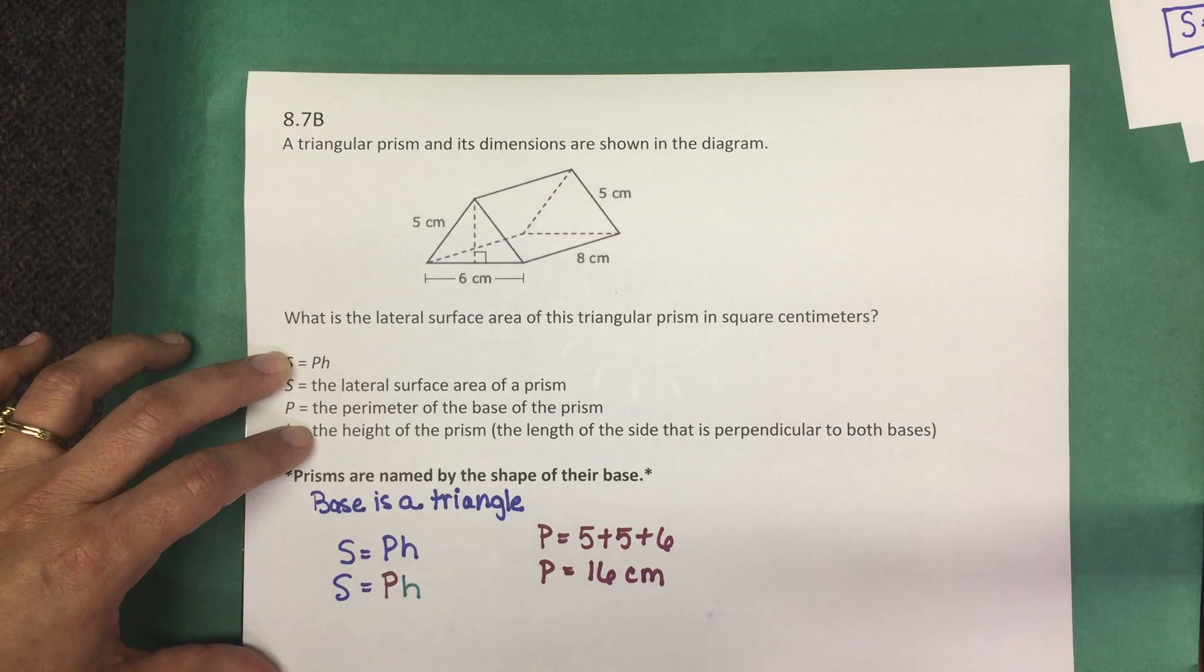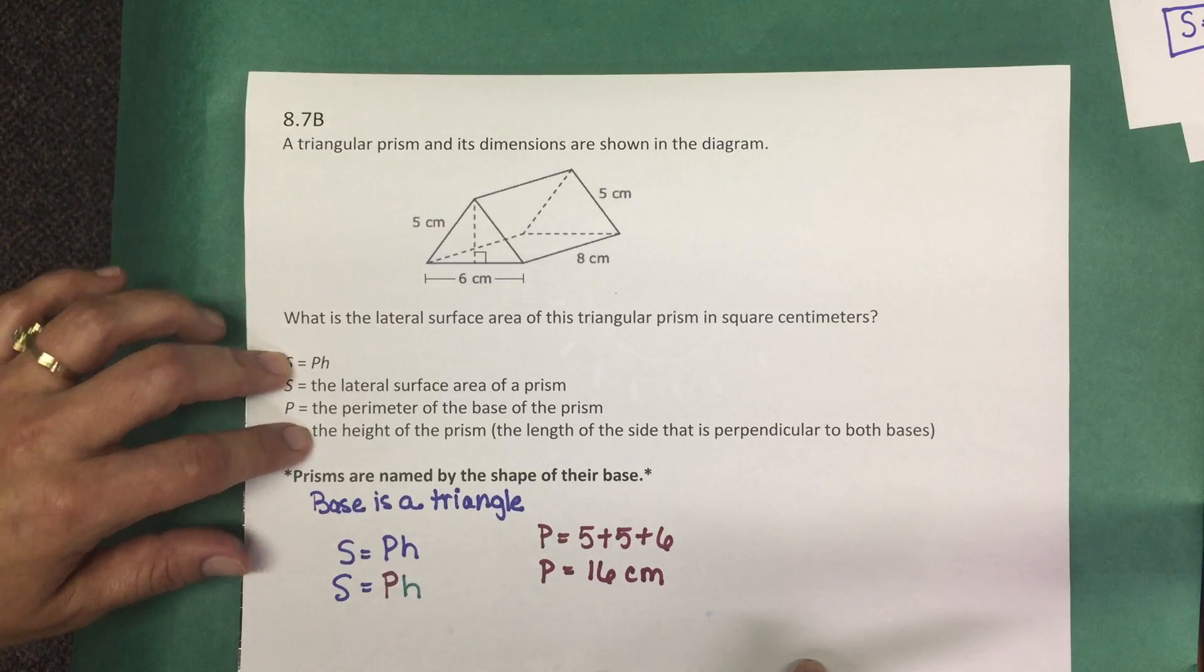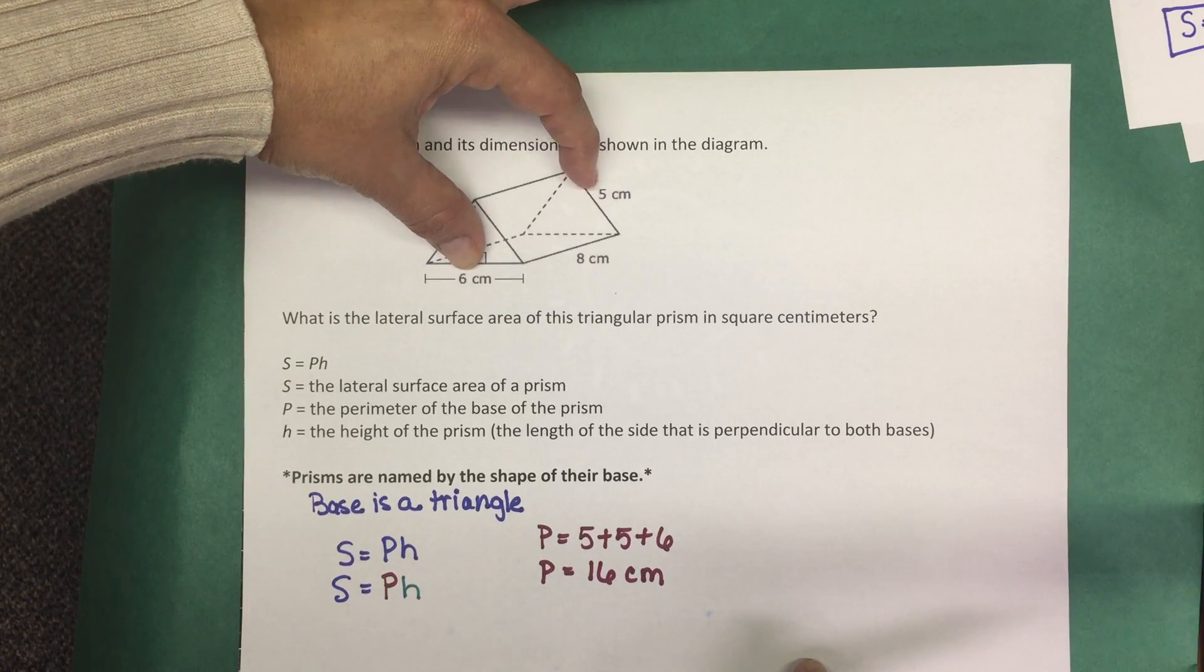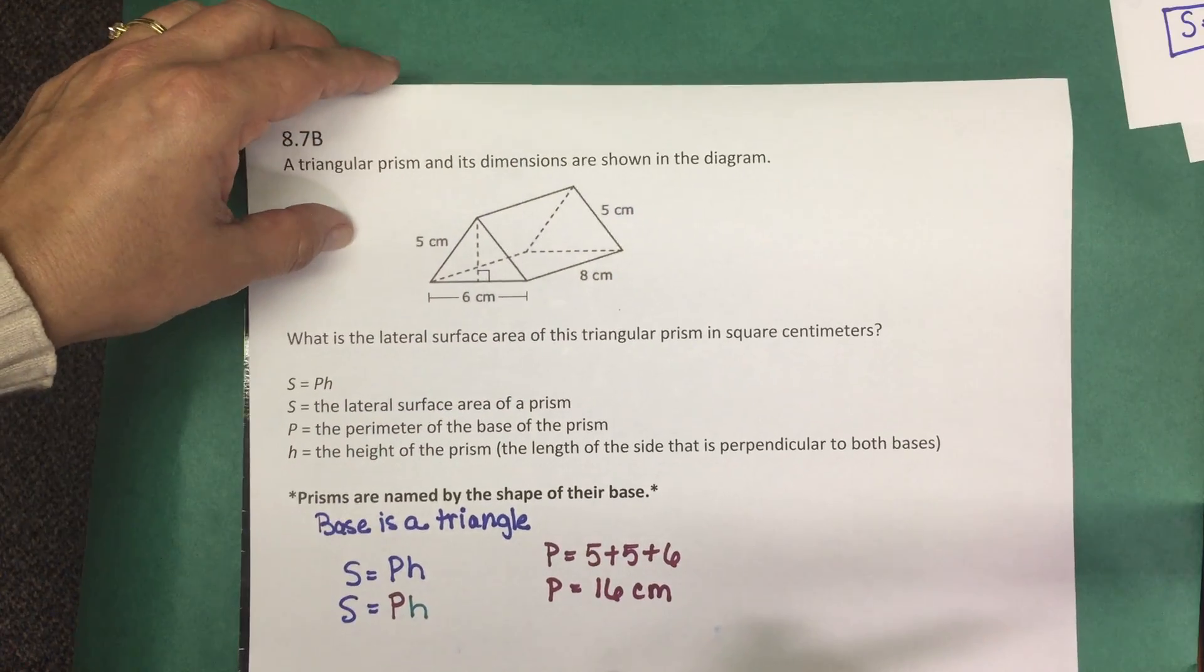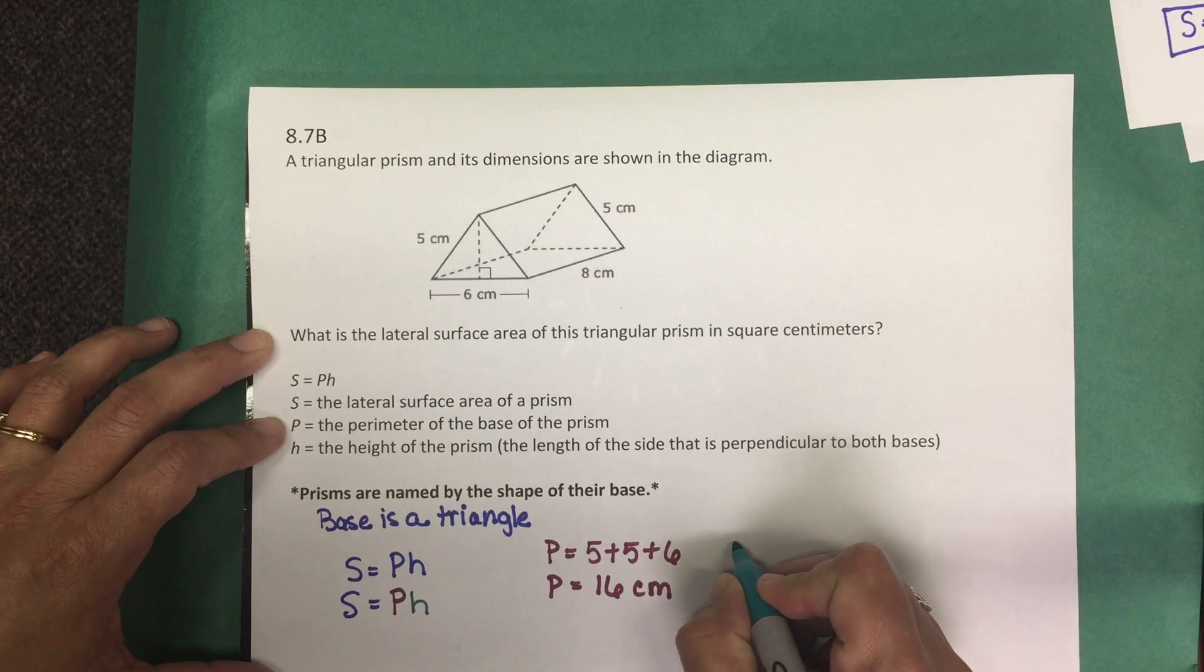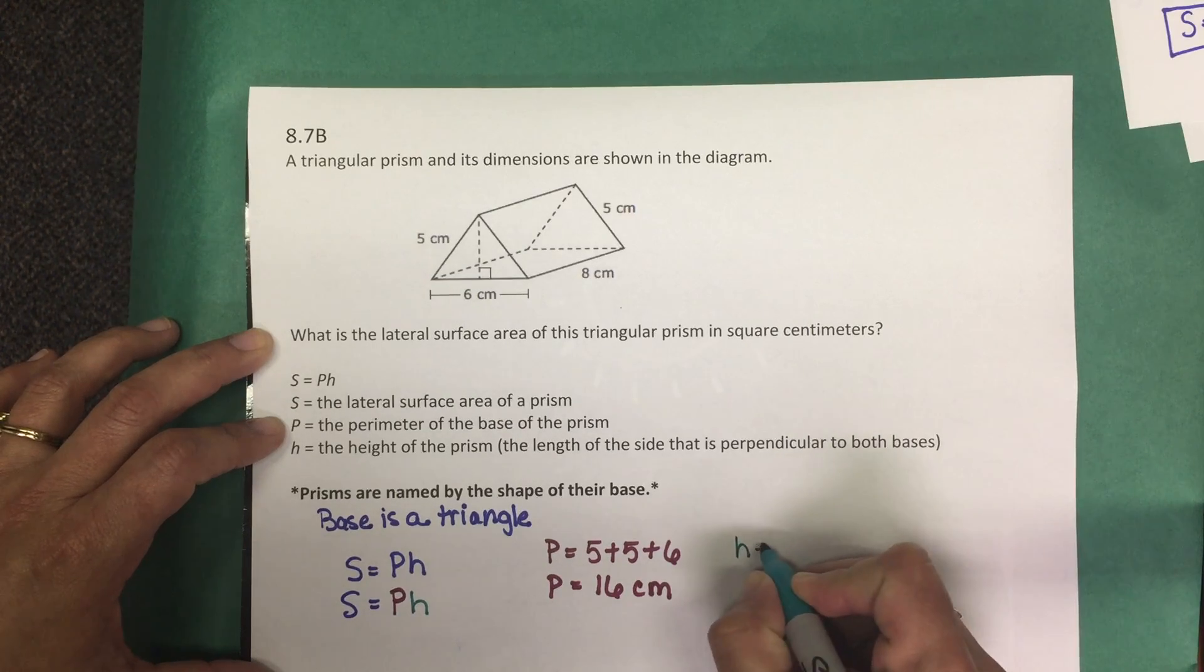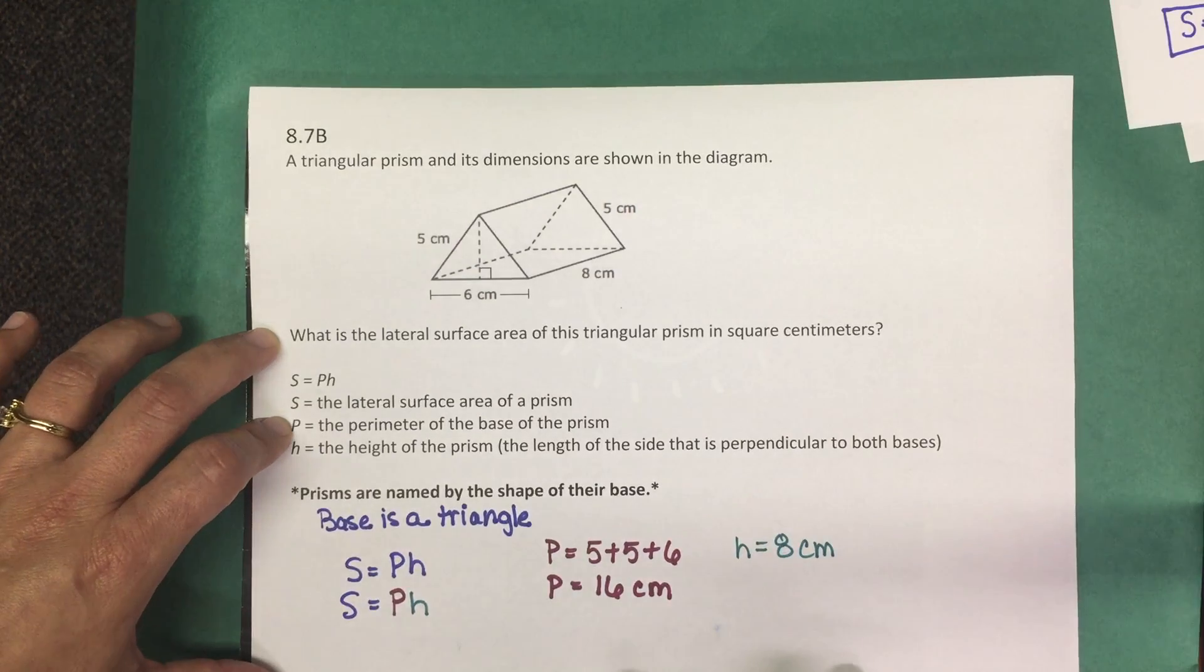Now for the height, remember that the height is the length of the side that is perpendicular to both bases. We look here at our bases and we see here we have a side labeled 8 centimeters that's perpendicular to the bases. So the height of the prism is 8 centimeters.